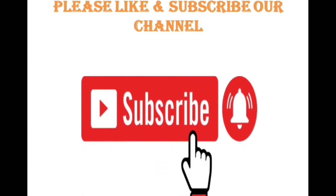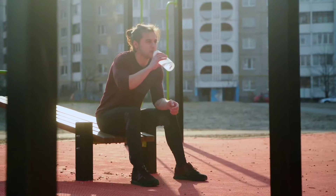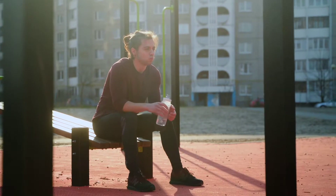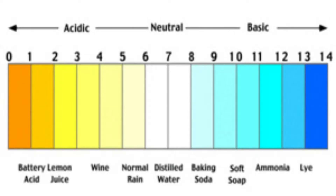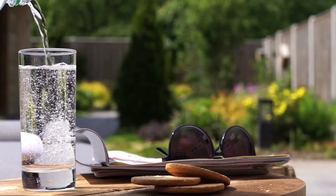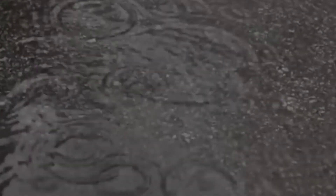Before we move forward, it is requested to all new viewers to please like and subscribe our channel so that you can get our latest uploads. pH is an indicator of the acid or alkaline condition of water. The pH scale ranges from 0 to 14; 7 indicates the neutral point. The normal pH range of drinking water is 6 to 8.5. The pH is mostly a result of natural geological conditions at the site and the type of minerals found in the local rock. The pH can also be affected by acid rain.